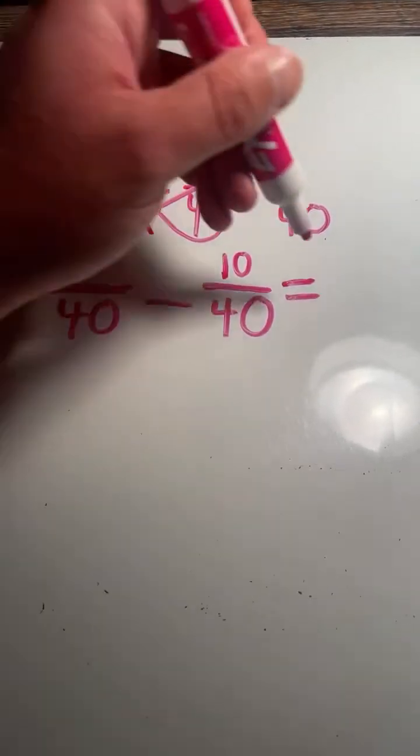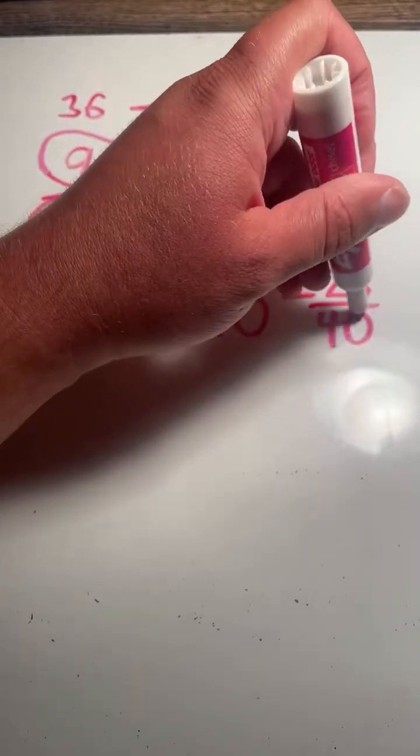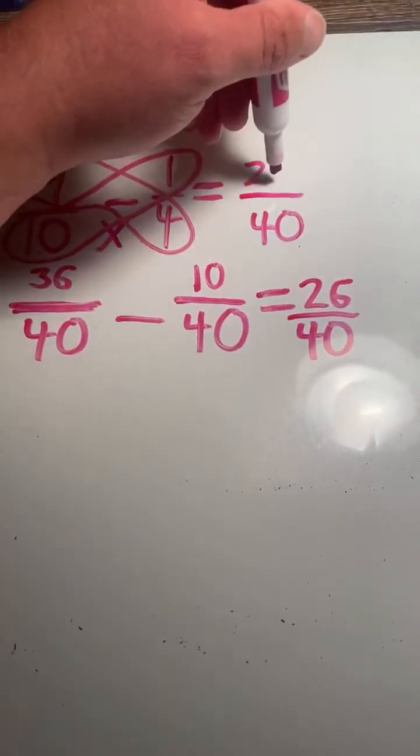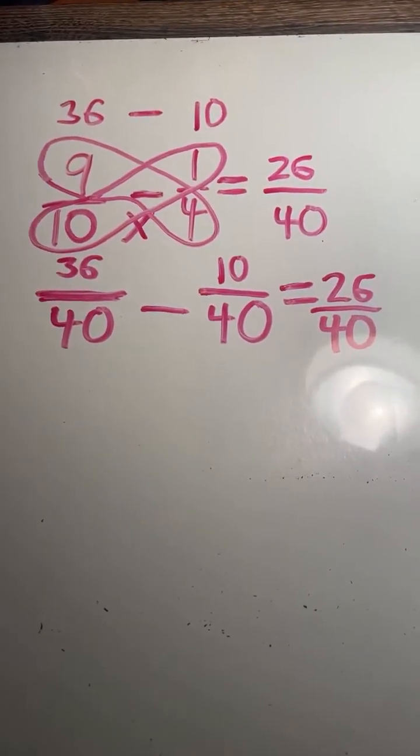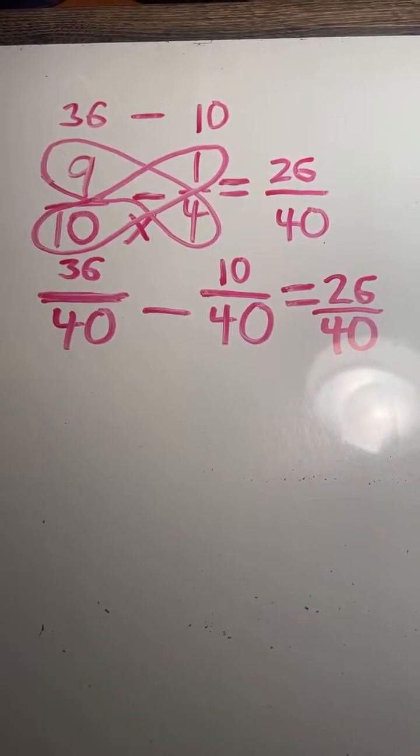So 36 minus 10 equals 26. Now that we have a common denominator, it will stay the same when we subtract the fractions. And we have our answer. Nine-tenths minus one-fourth equals 26-fortieths.